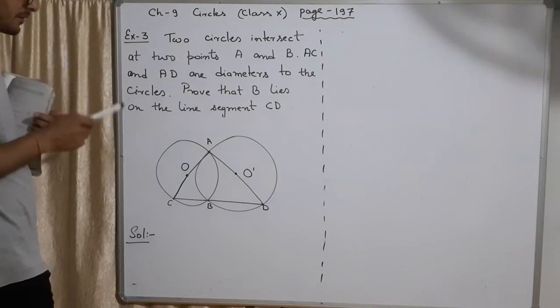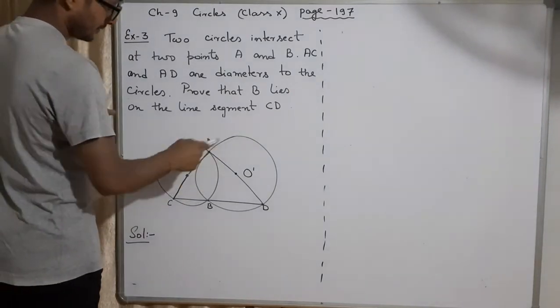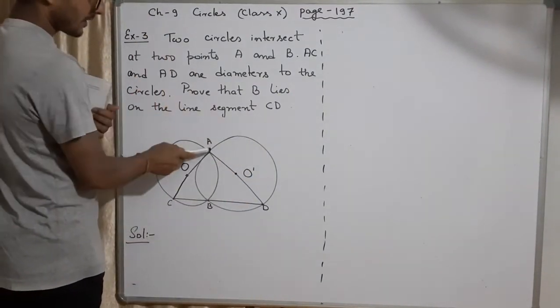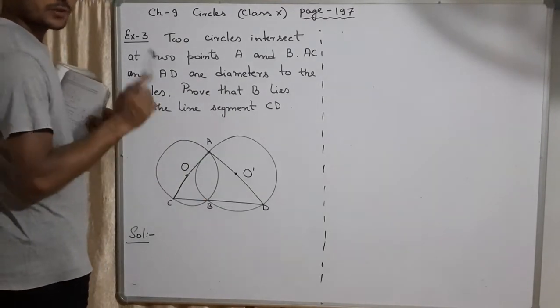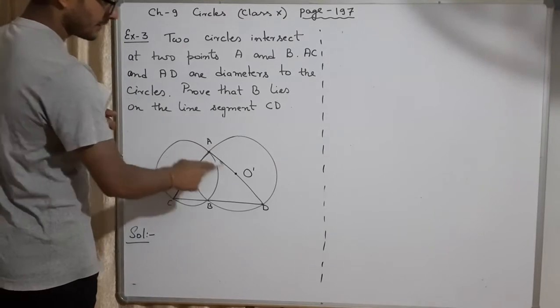Now we will be solving this. Try to understand the question again. Two circles are there. They are cutting at one end here, A and B. After that, both have diameter, AC, AD.